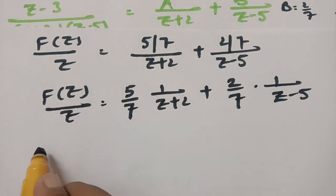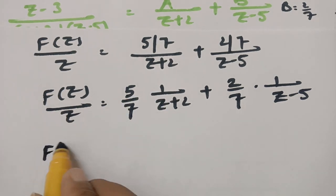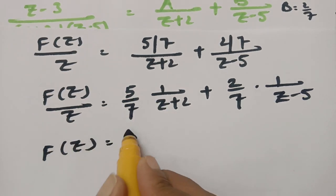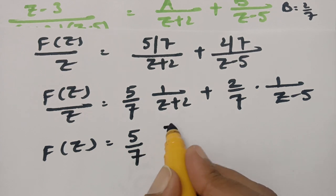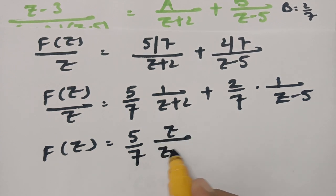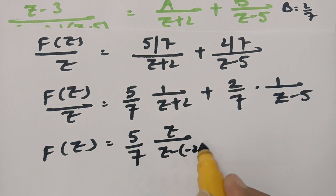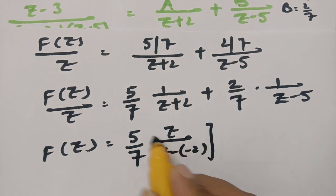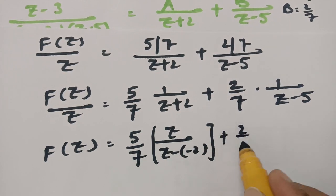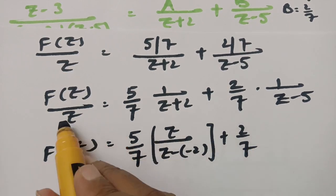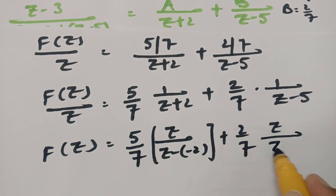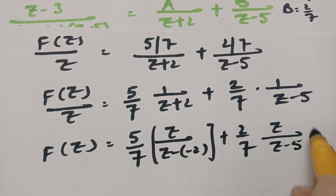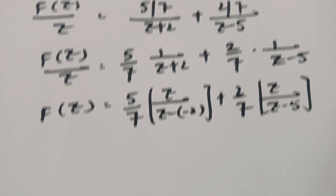Therefore, sending Z to the other side, F of Z is equal to 5 by 7 times Z by Z minus of minus 2 plus 2 by 7 times Z by Z minus 5.